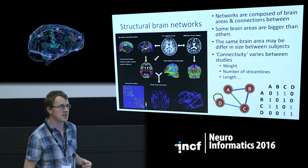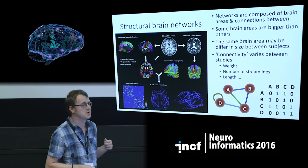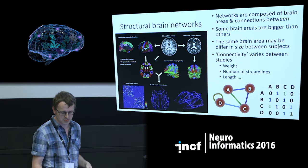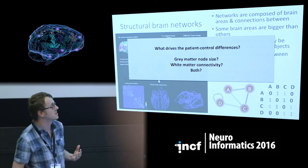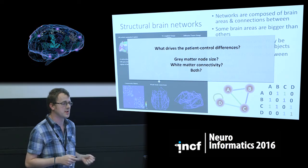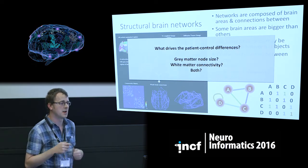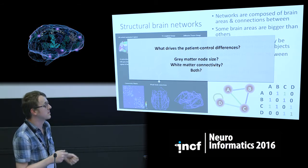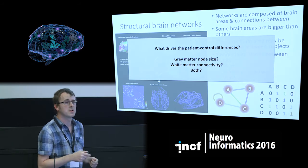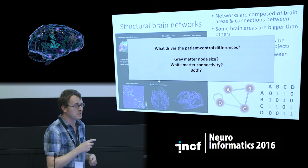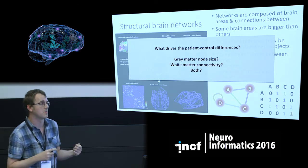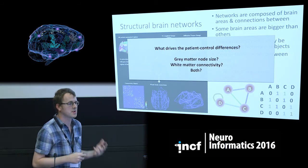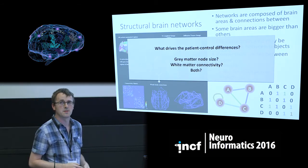As shown in previous work, many studies have found alterations in these edge strengths or connectivities between patients and controls. My question is: what's driving this? Is it alterations in the grey matter node size, or is it alterations in white matter connectivity, or a combination of both? Just as all nodes are not equal in size, the same node can be bigger in one subject than another, which can also influence connectivity.